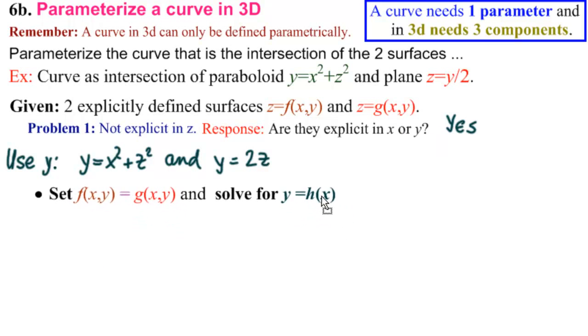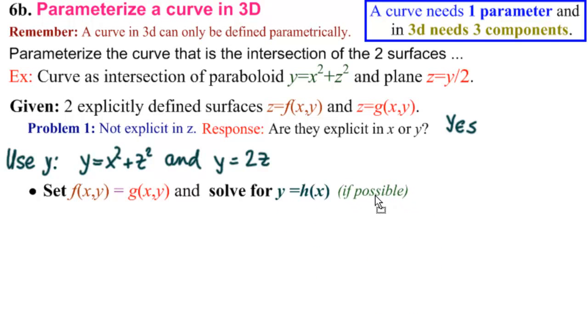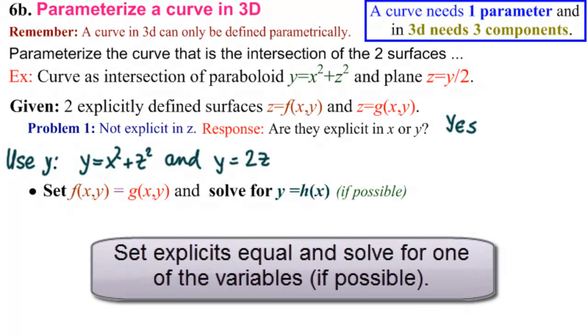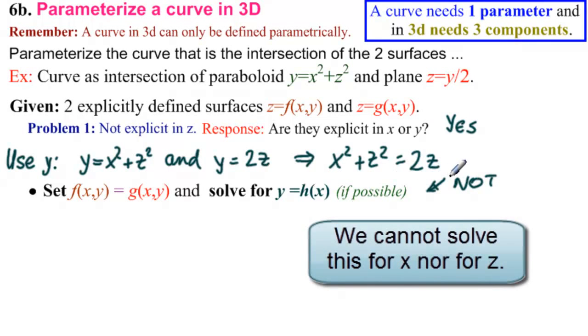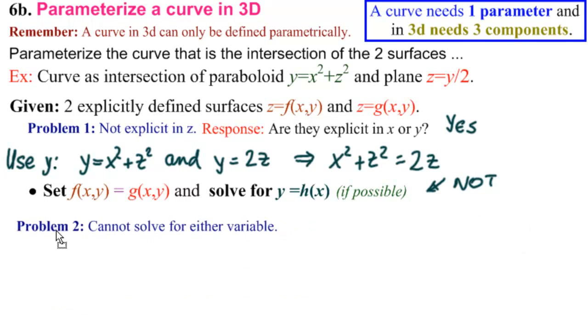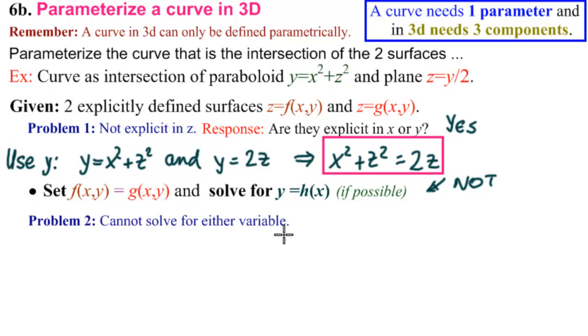So what was our plan once we had explicits? We were supposed to set them equal to each other and solve for one of the variables, but we had this little caveat, if possible. So let's go back up here and set them equal. What do we get? x squared plus z squared equals 2z. Not possible. These are implicit in both x and z. So now we've come to problem number two. In this equation here, we cannot solve for either variable.